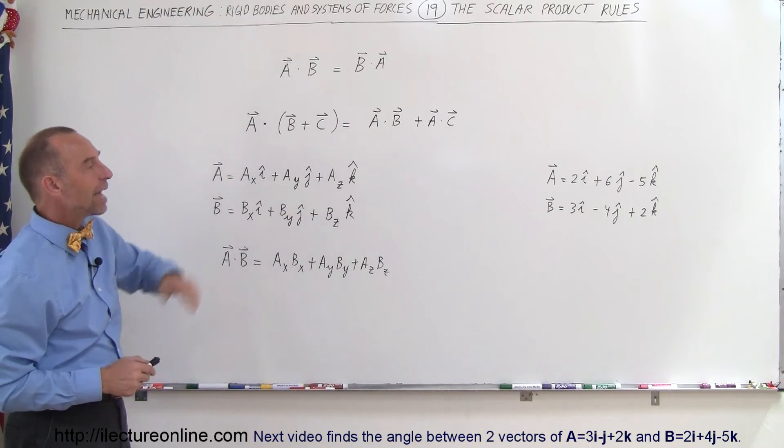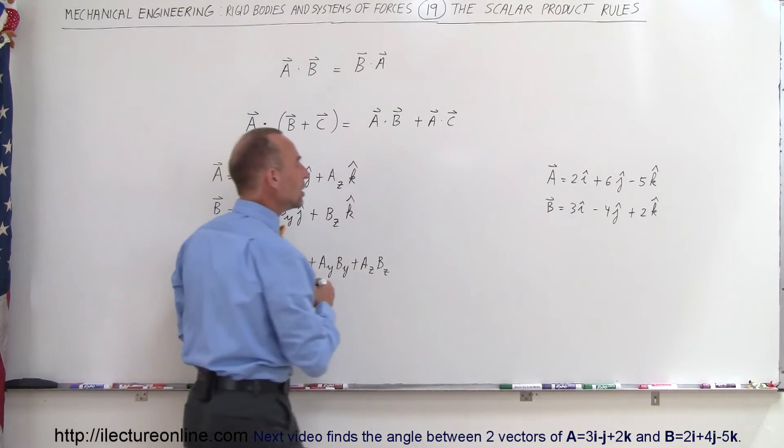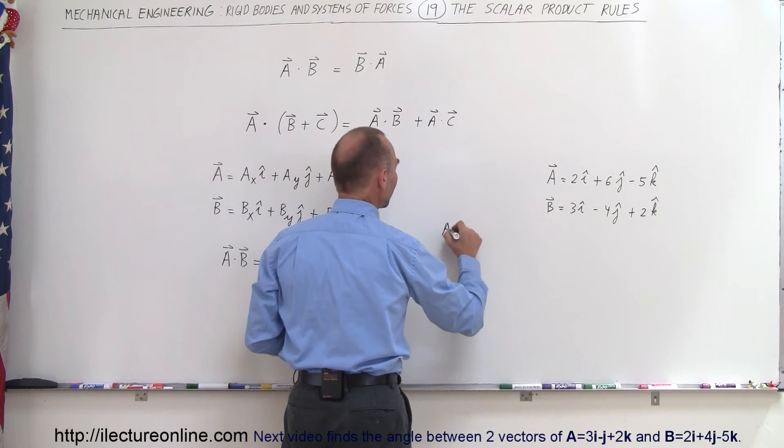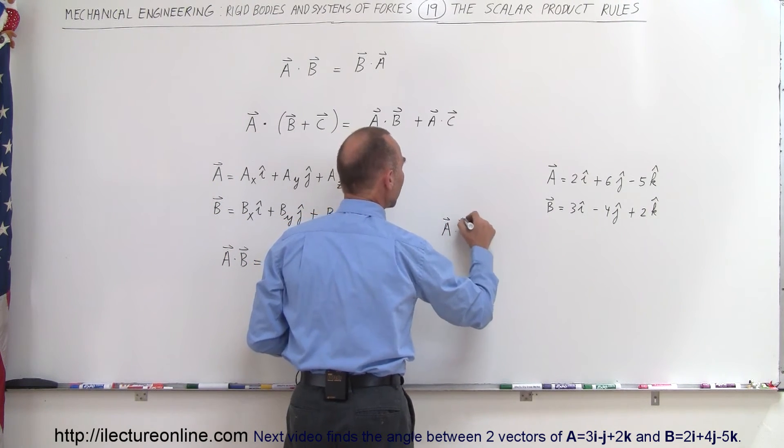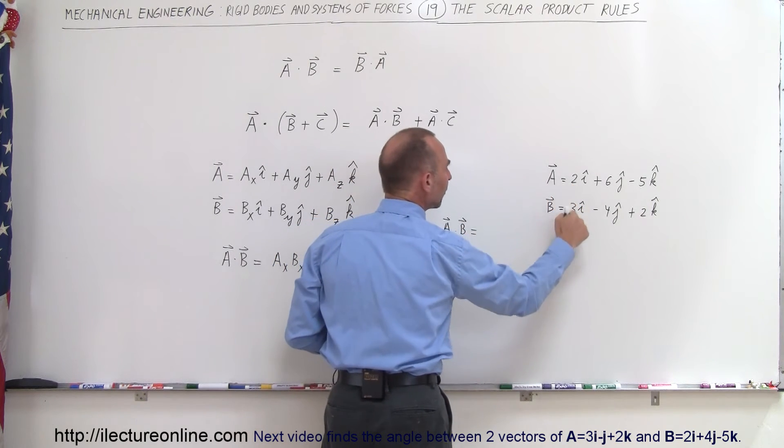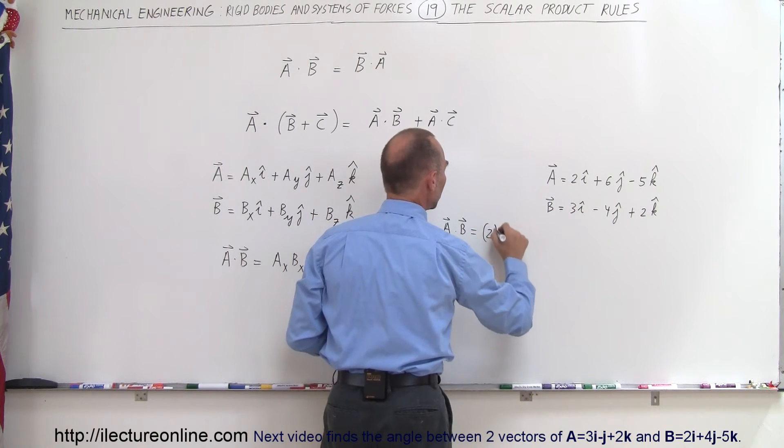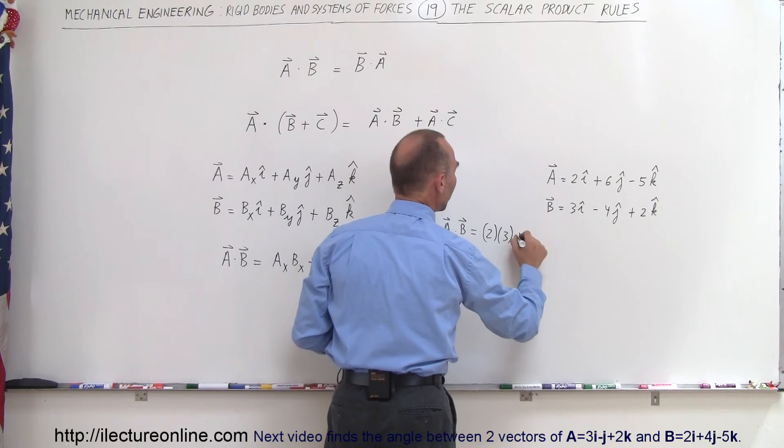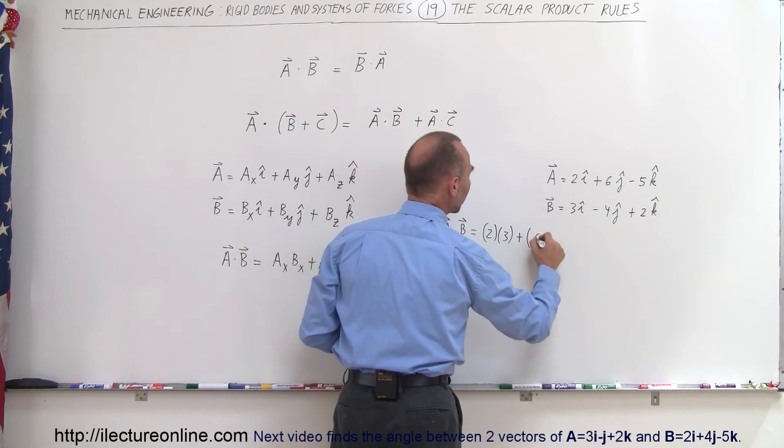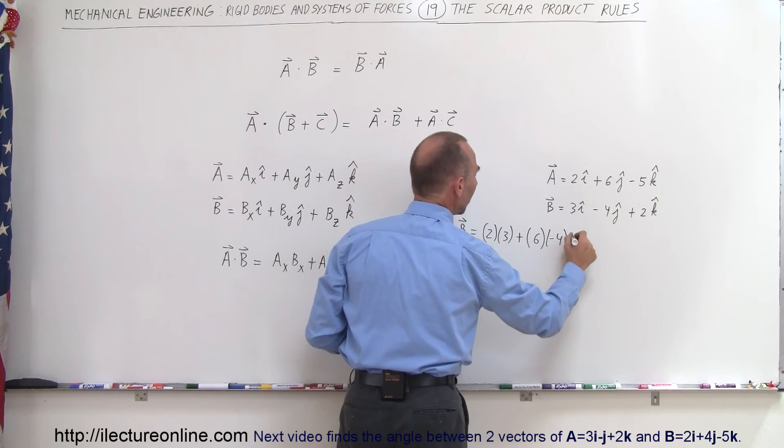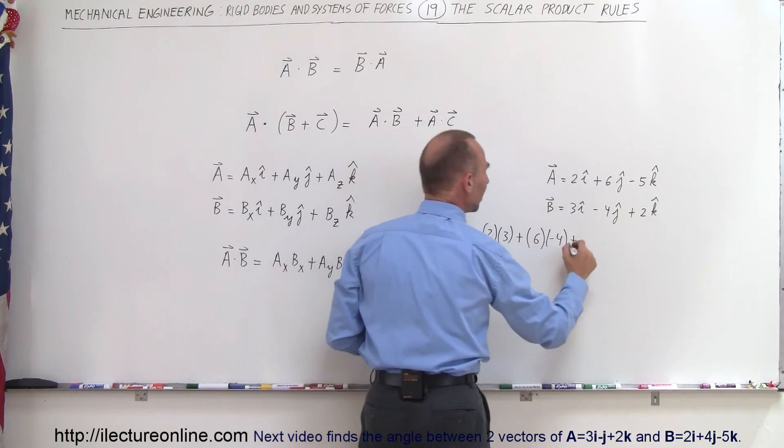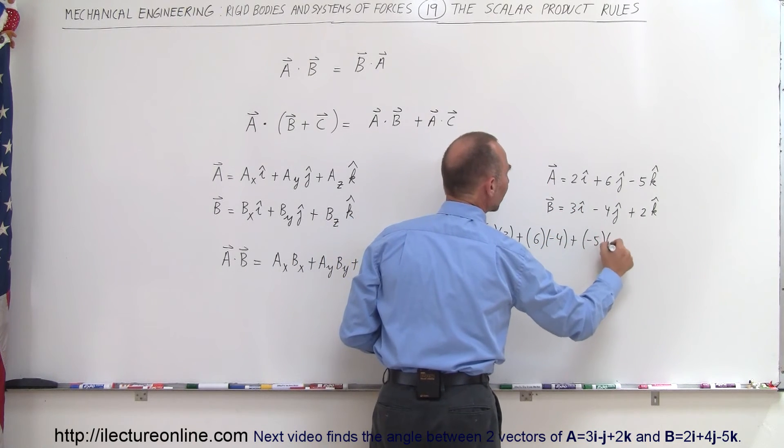As an example, let's say we have A and B right there and we want to do the scalar product A times B. So A times B is therefore equal to the product of the X components, that would be 2 times 3, plus the product of the Y components, which is 6 times negative 4, plus the product of the Z component, which is minus 5 times 2.